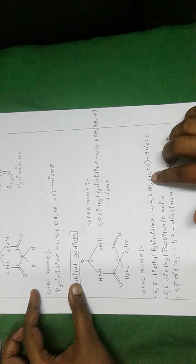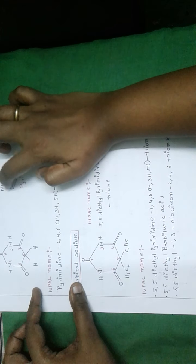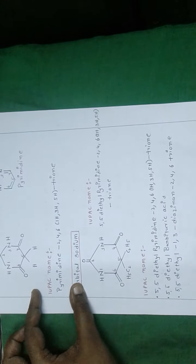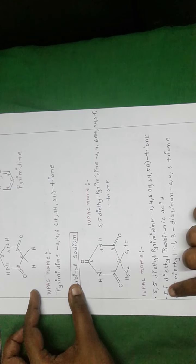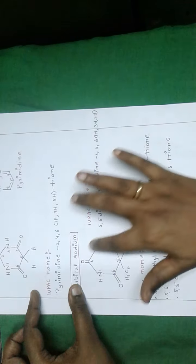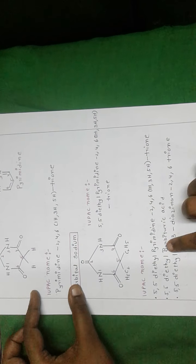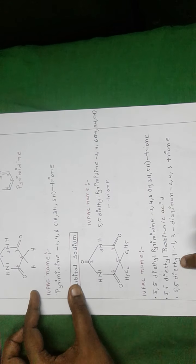'1H,3H,5H' — at the first, third, and fifth positions it has three double bonds, which are reduced in the form of three ketone groups. Next nomenclature: '5,5-diethylbarbituric acid' — it is the barbituric acid nucleus, that's why we call it barbituric acid; at the fifth position, two ethyl groups are present.